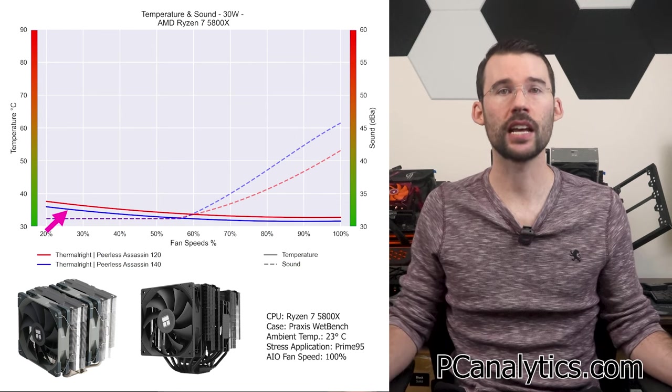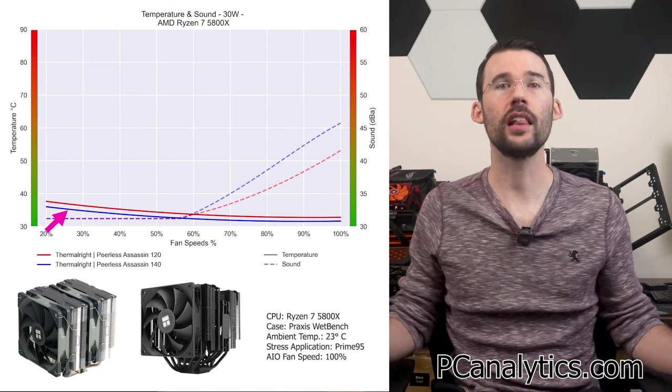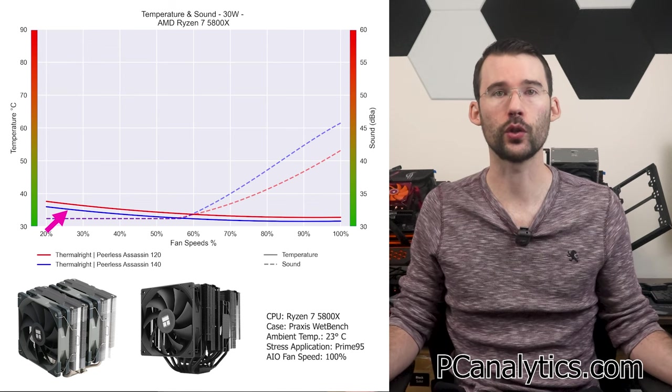At idle, the Peerless Assassin 140 in blue runs slightly cooler relative to the Peerless Assassin 120 in red.